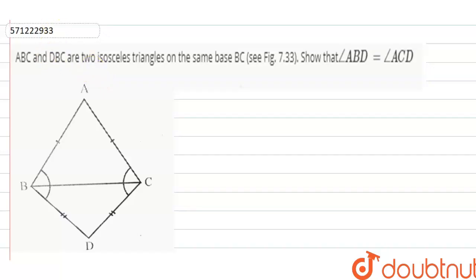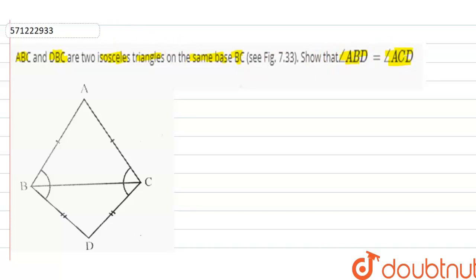Hello guys, so this is the question. In the question it is given that ABC and DBC are two isosceles triangles on the same base BC. We have to prove that angle ABD is equal to angle ACD. So first write the given things in the question.